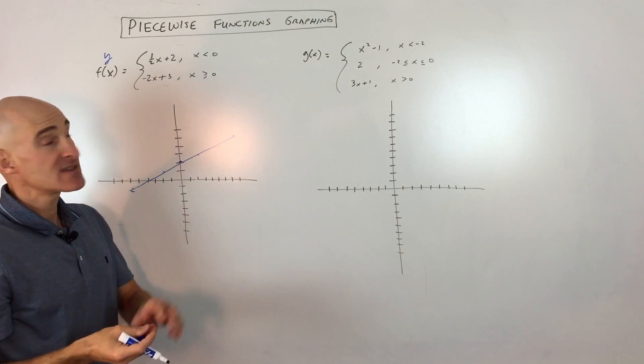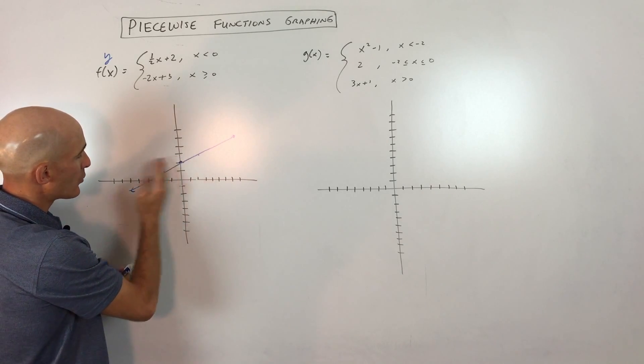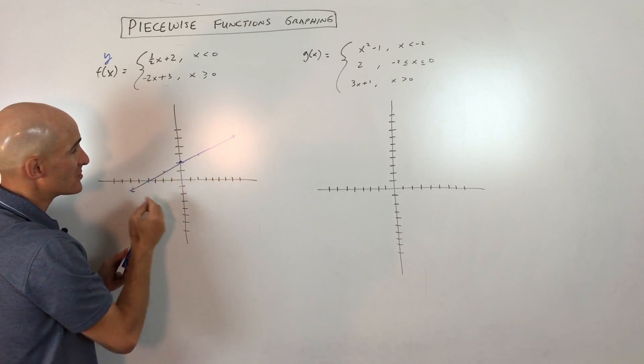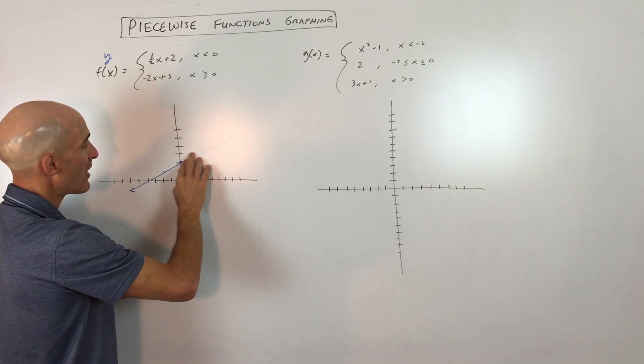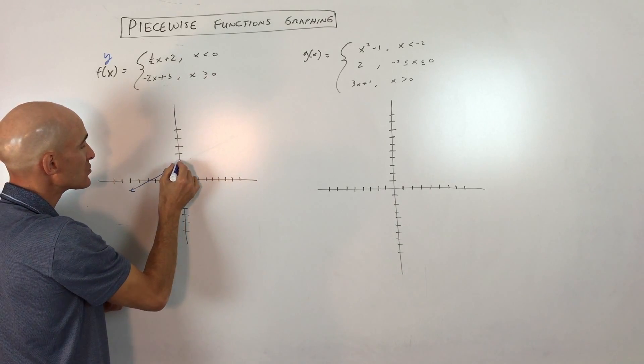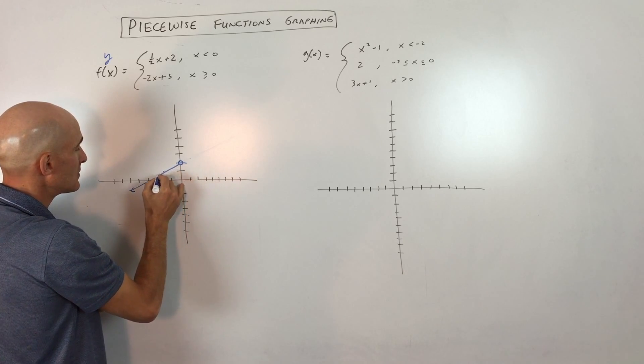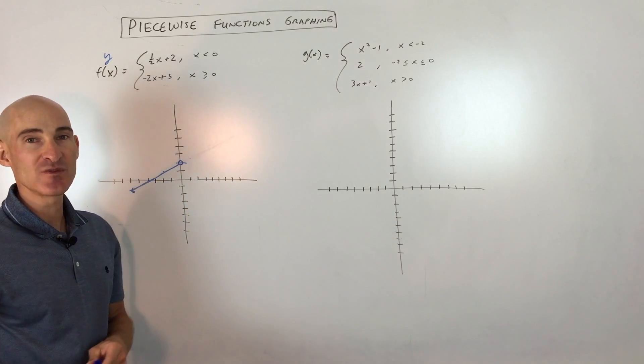Okay, but then it says only when x is less than 0. So here's 0, and we're going less than, so to the left. So that means that we don't need this part of the graph here. We don't even need this point here since it's less than but not equal to 0. So I'm just going to put an open circle there and going to the left.